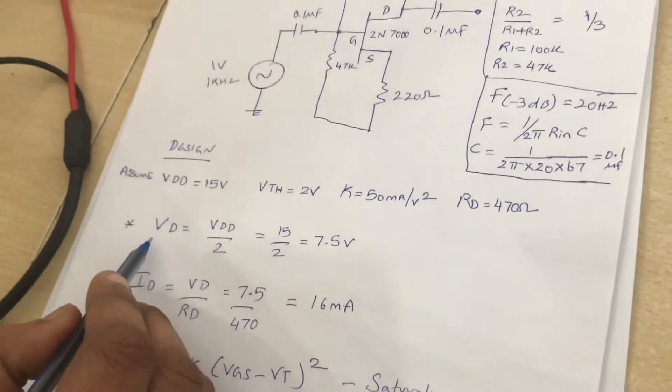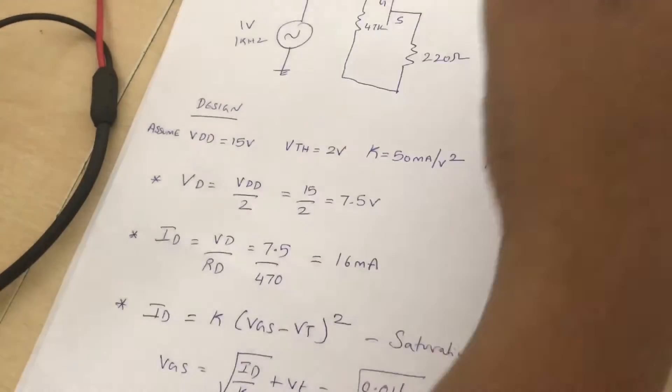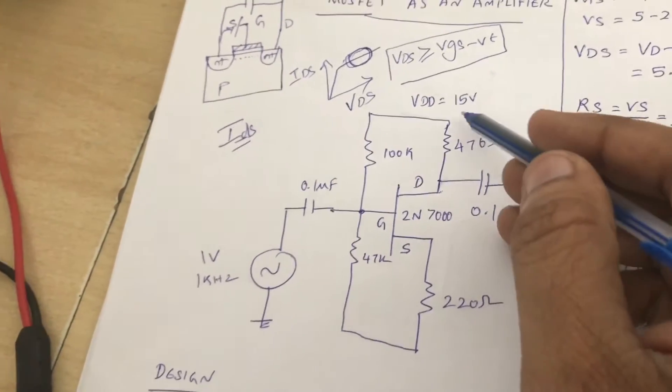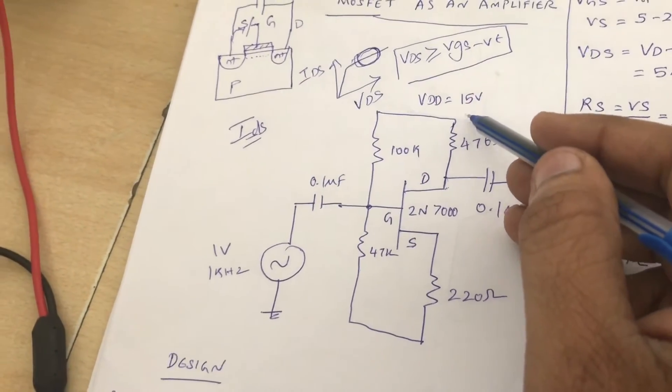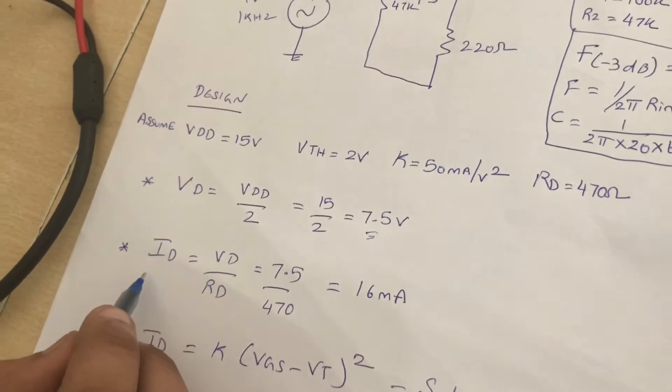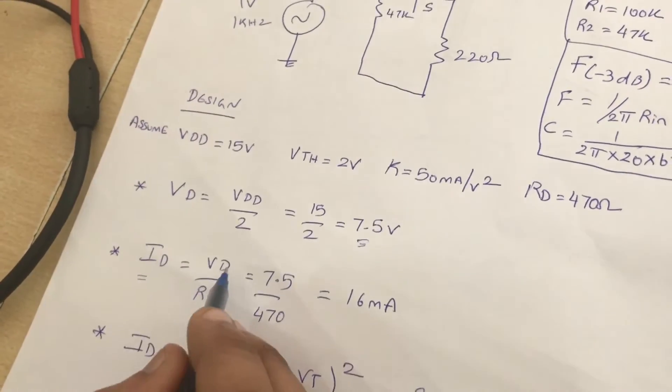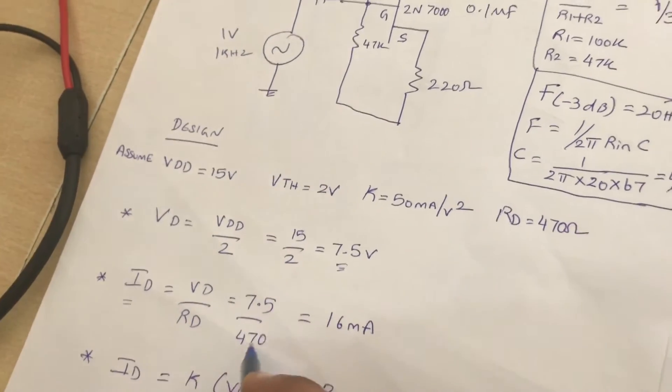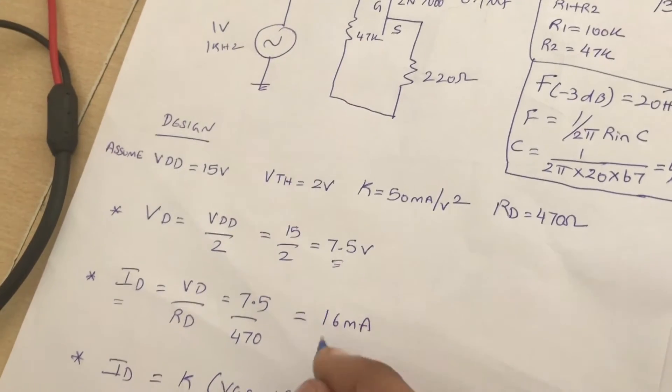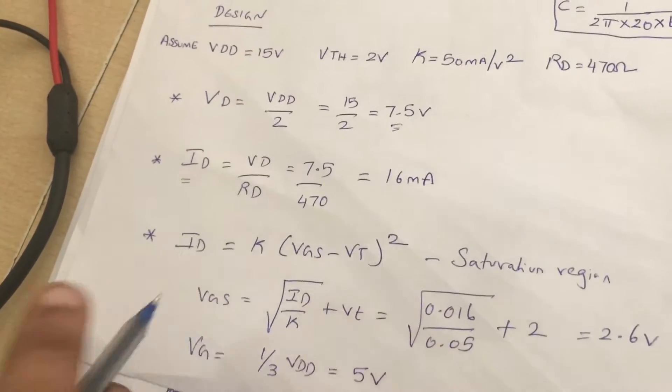Now we are going to assume that the drop across VD is nothing but half of my supply voltage, which is 7.5 volts. And now I can calculate my drain current, which is VD by RD. Since we know VD and RD, the drain current will be 16 milliamps.